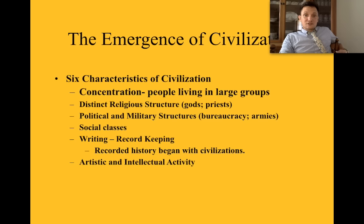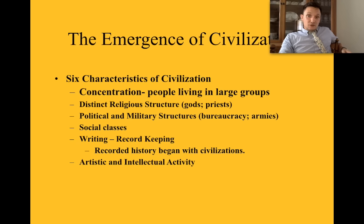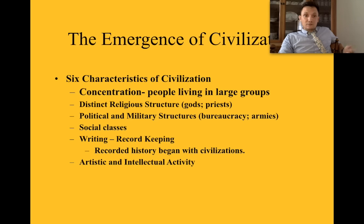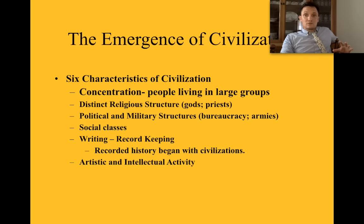The emergence of civilizations has six characteristics. The characteristics of a civilization are: a concentration of people living in large groups; a distinct religious structure — gods, priests, an entire hierarchical order; political and military structures — a bureaucracy, an army, having the ability to take care of citizens and wage war; social classes; record-keeping and writing — we are a civilization to this day simply because we write down occurrences, and you're all historians when you post on Twitter or Instagram; and finally, artistic and intellectual activity.